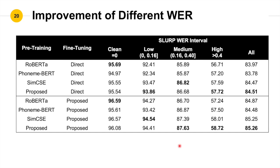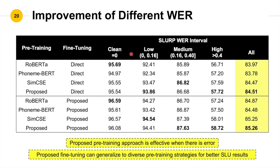In the last section, let's check which part of the data actually improves. The columns stand for data with different error rate intervals. The first column does not contain any error, and it turns out that RoBERTa base is the best model there. However, as long as there is a recognition error in the input data, our proposed pre-training methods provide significant improvement. Looking at the four later rows using the proposed fine-tuning techniques, performance is improved no matter which pre-training model we choose and no matter whether or not there is any error in the input data.